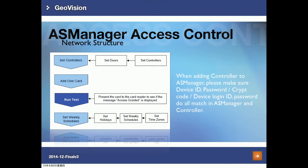You can follow this flowchart when adding an AS controller to AS Manager. First you add the controller, then add the doors, then connect the readers. Once the readers are connected, you can swipe a card at the controller and AS Manager will display the card info so you can add it. You can also do testing to verify the cards can be read by the readers.